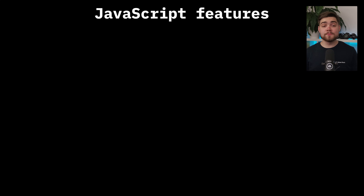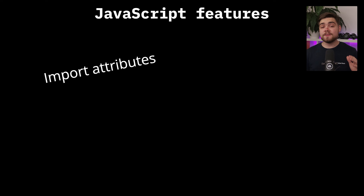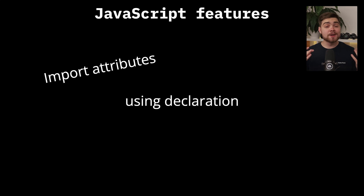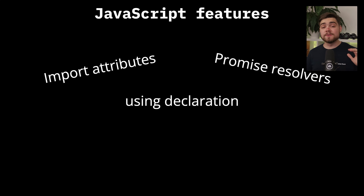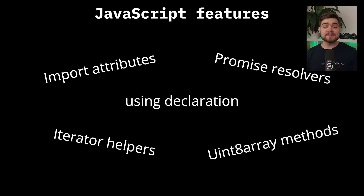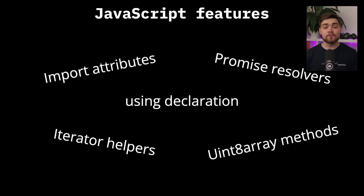The JavaScript engine improvements are impressive too. They've added support for new ECMAScript features like import attributes, the using declaration, promise resolvers, iterator helpers, and new native array methods. The using declaration is particularly exciting as it brings Python-style context managers to JavaScript, which should make resource cleanup much more reliable.